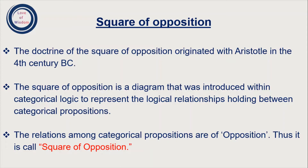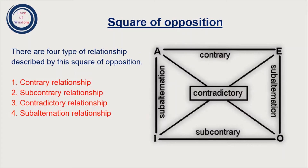Now I will show you the diagram. The relations among categorical propositions are of opposition. Basically, it is a diagram of opposite relations. You can see that it is a square diagram.